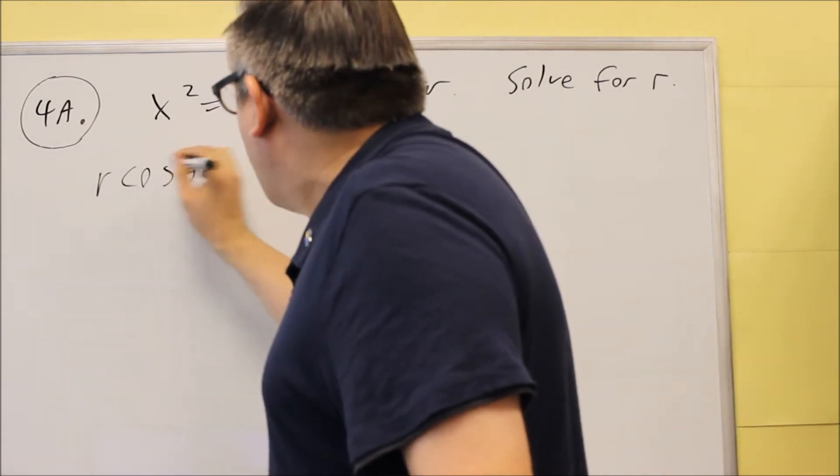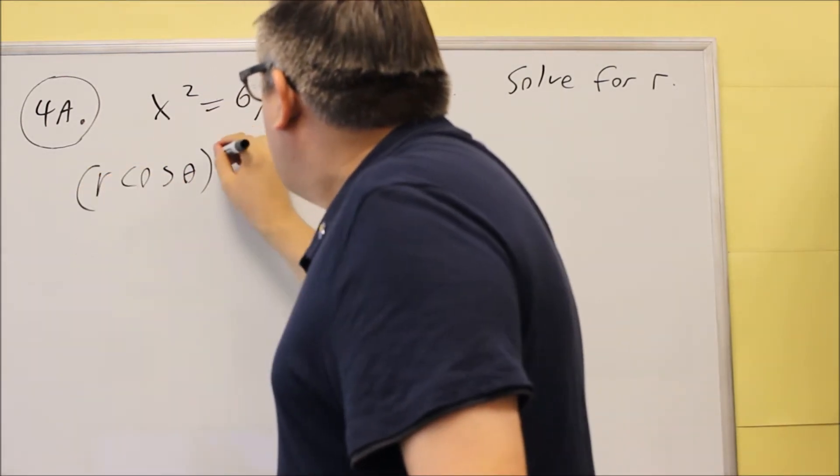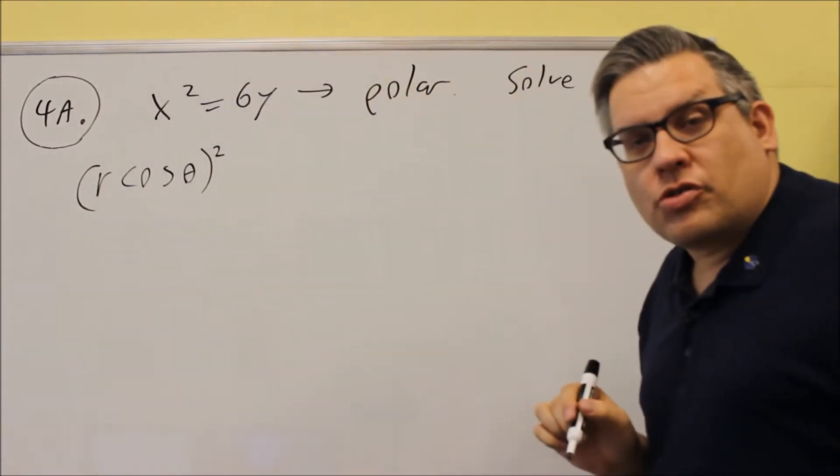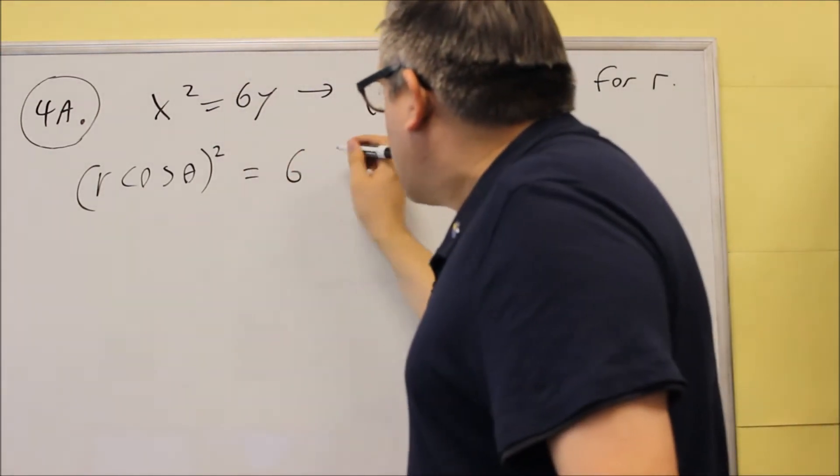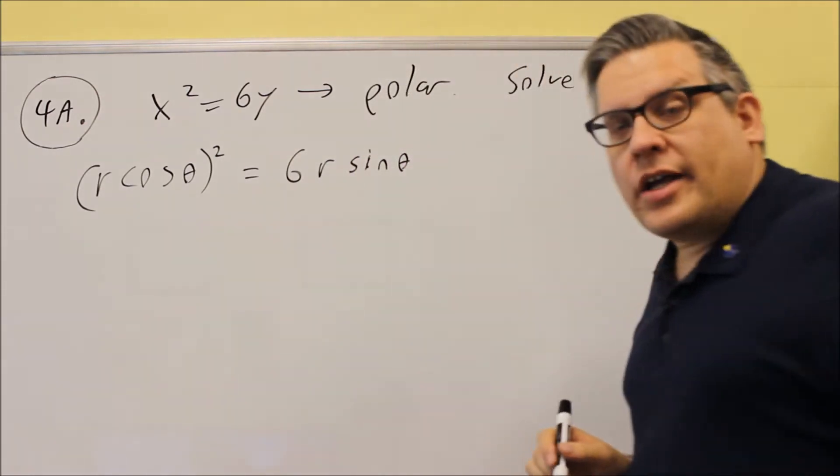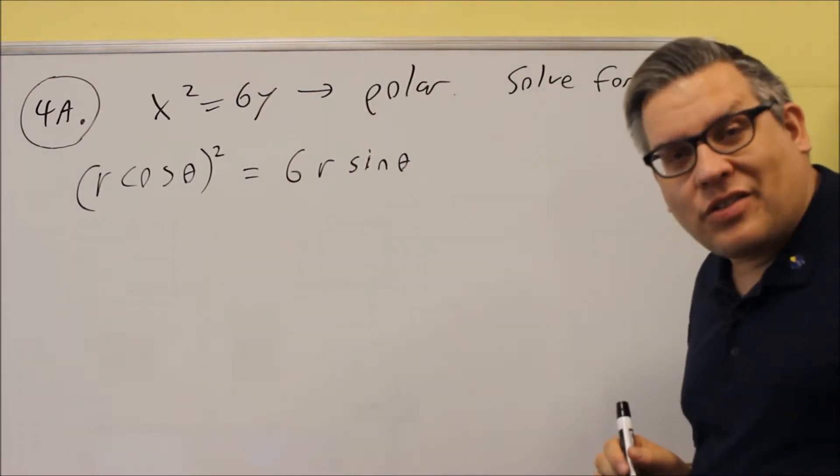So instead of the X, we're going to put in R cosine theta, but that has to be squared because there's a square there originally. Equals six, and then instead of the Y, we'll replace it with R sine theta.